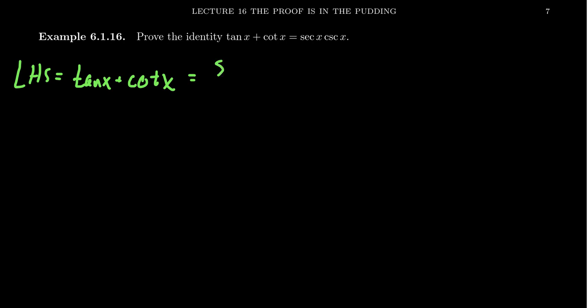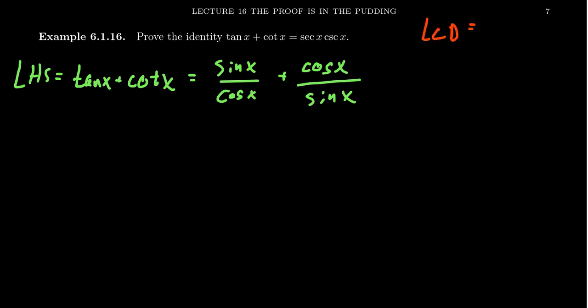Tangent is the same thing as sine over cosine. Cotangent is the same thing as cosine over sine. That doesn't feel like it's helpful, but put some faith here — fractions are good in this situation. We need to find a common denominator to add these together. The least common denominator is just going to be the product of the two: cosine x times sine x.